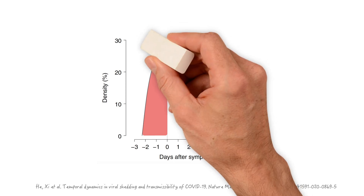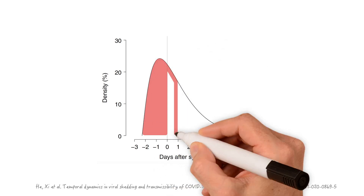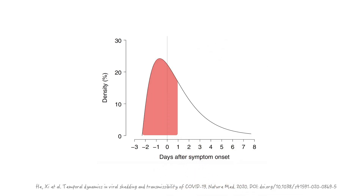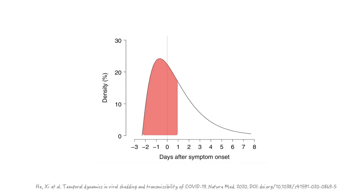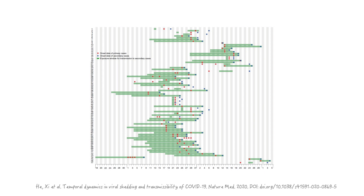Let's say that a patient develops very mild symptoms on day zero and on day one the symptoms get worse and she seeks medical attention and is diagnosed with COVID-19. Well, at that point, most of the secondary cases have already been infected.